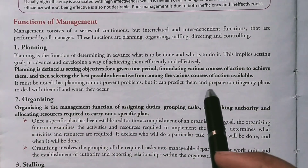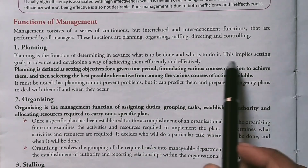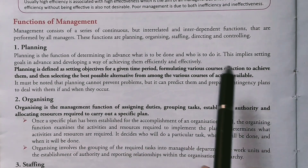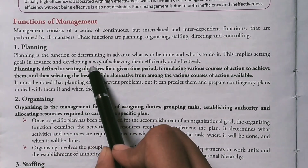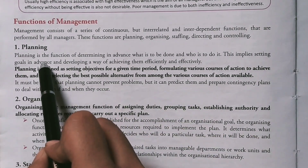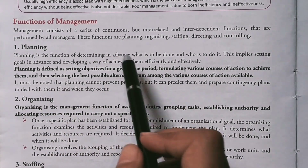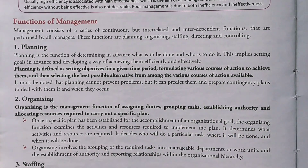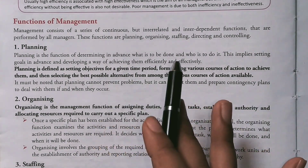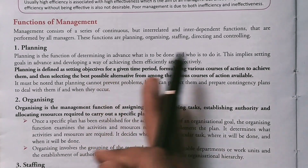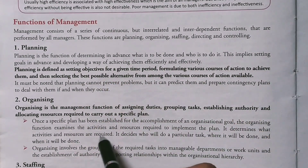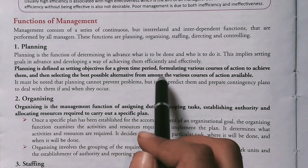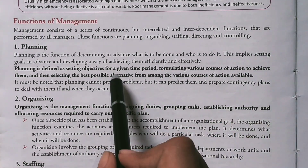Planning is not only for business — in life also planning is very important. This implies setting goals in advance and developing a way of achieving them effectively and efficiently. Planning is defined as the setting of objectives for a given period, formulating various courses of action — like finding what marks you need, what coaching is needed — these are small actions to achieve the objective — and then selecting the best course of action from among the various options.